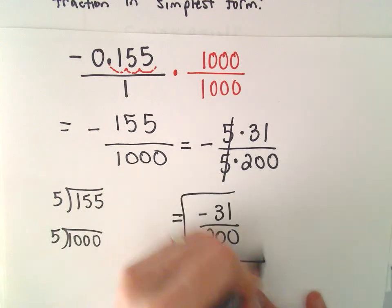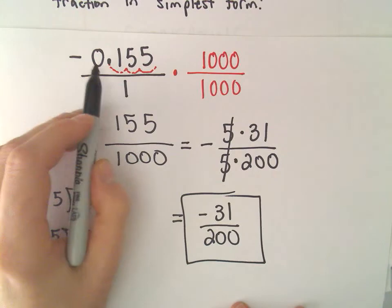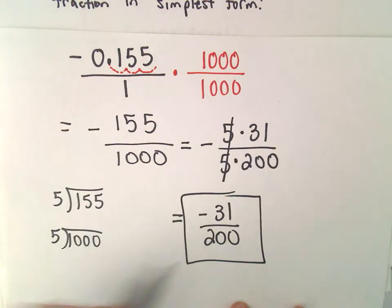So in this case, we've got it now simplified. So, again, negative 0.155. We can write that as the fraction negative 31 over 200.